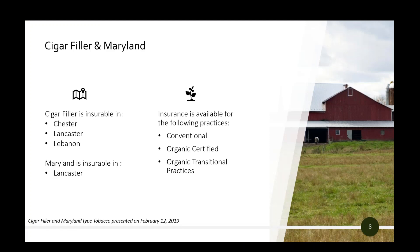Insurance for cigar filler tobacco is only available in the Pennsylvania counties of Chester, Lancaster, and Lebanon — that's it nationwide. Maryland tobacco is insurable in six counties in the U.S.: five of them are in Maryland, and one is in Lancaster County, Pennsylvania. Organic certified, organic transitional, as well as conventional are the insurable practices for those types in the state of Pennsylvania.